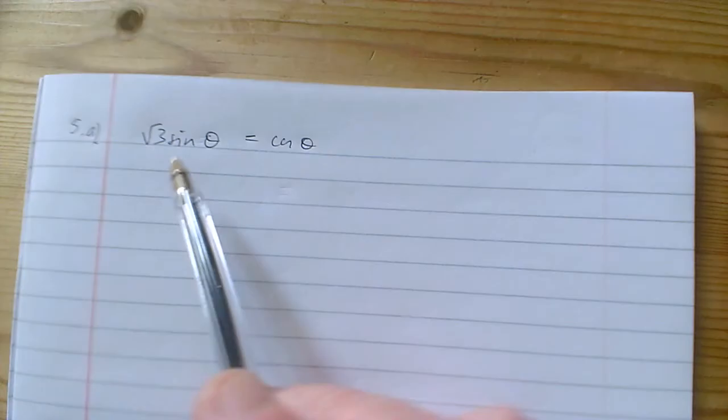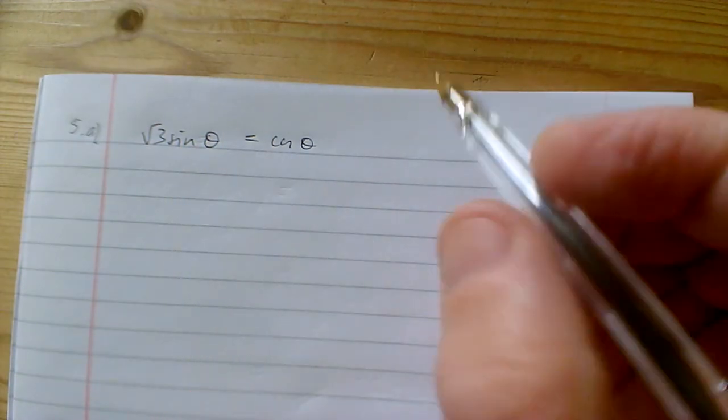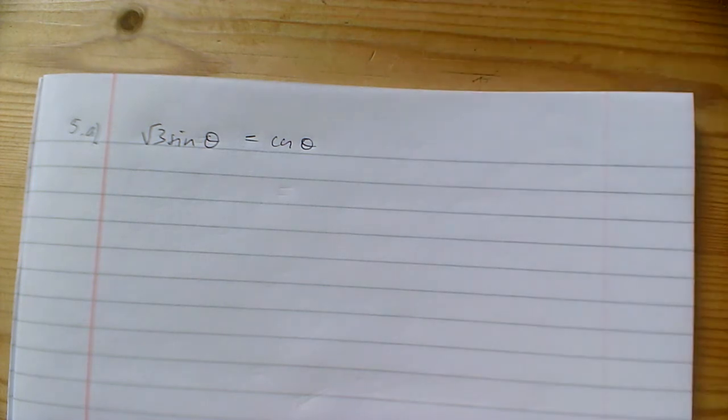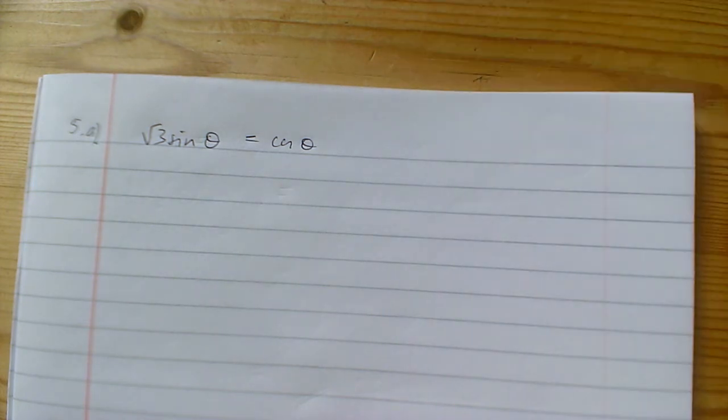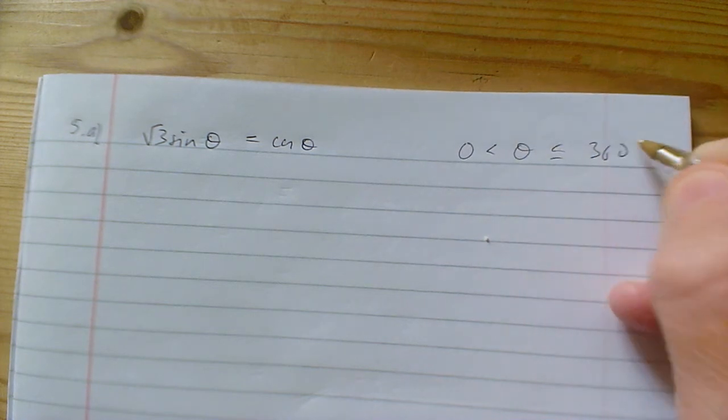So I want to explain it more clearly. We've got √3 sin θ = cos θ, and we need to solve it within the interval 0 to 360 degrees.